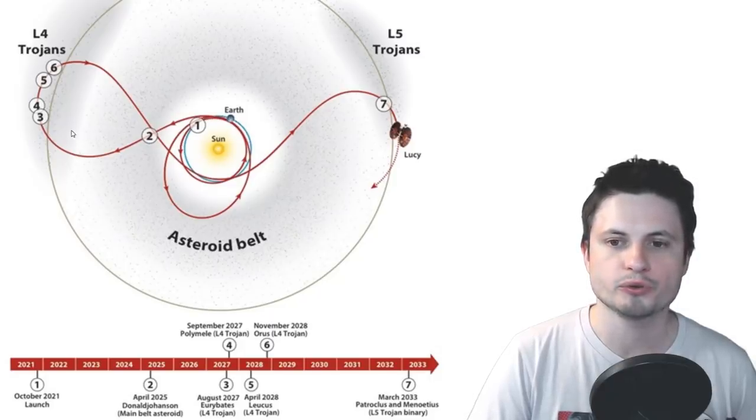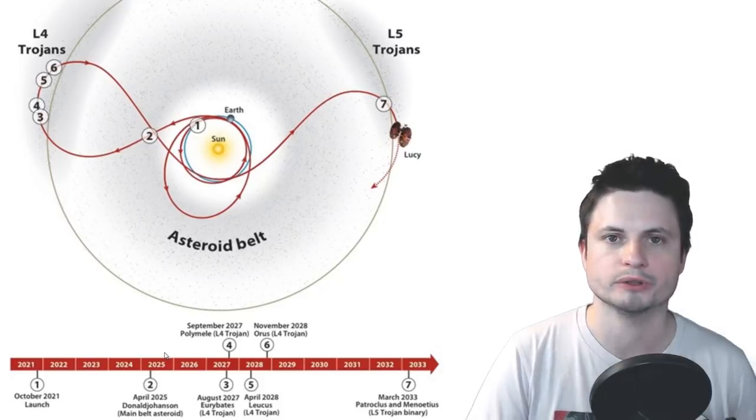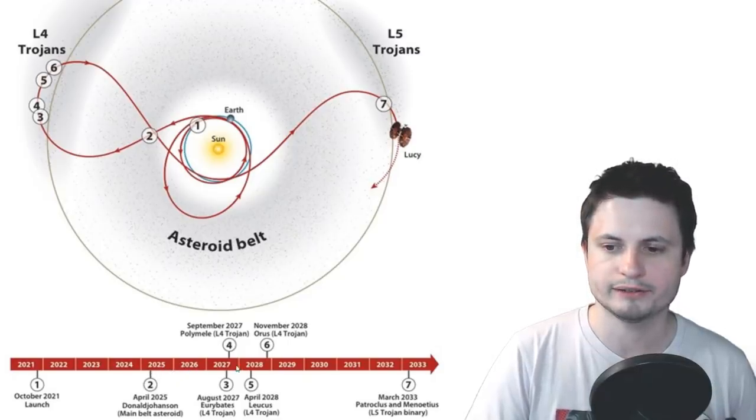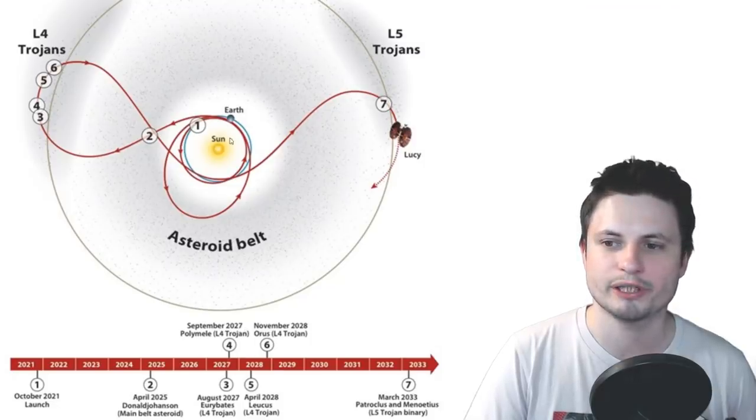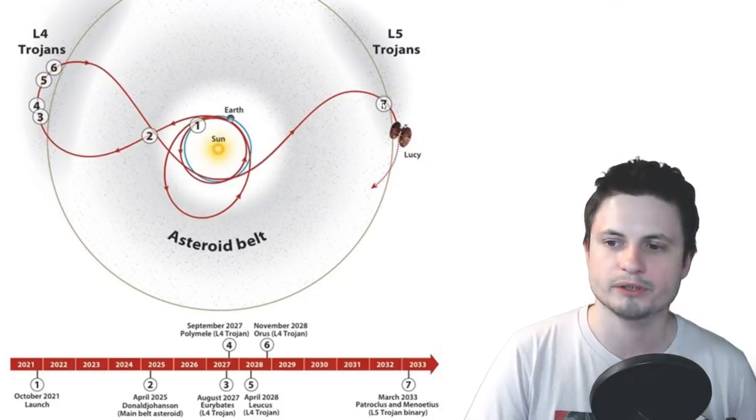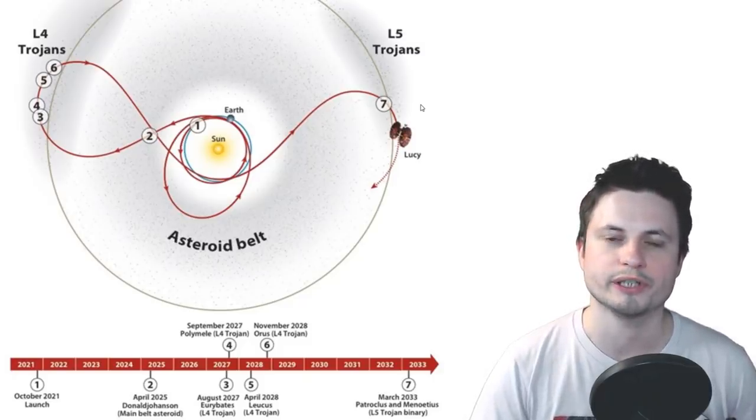So this is basically 2021, we'll launch the probe. It then goes to the L4 Trojans first. It explores four different locations. This will only be in about maybe 2025, mid 2025 until approximately 2028. And then it's going to take a few more years to go to the other side, where it's going to study the L5 Trojans.